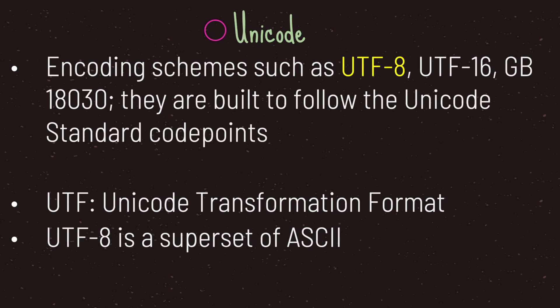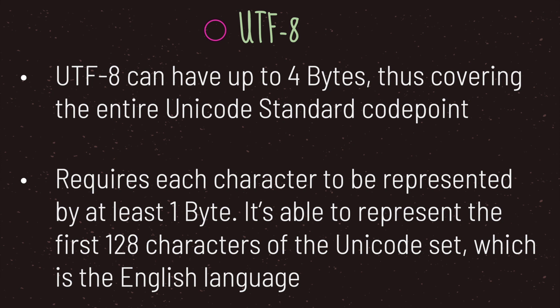There are a few encoding schemes that support Unicode — for example UTF-8, UTF-16, and GB18030 — and they are built to follow the Unicode standard code points. The most commonly used is UTF-8. UTF stands for Unicode Transformation Format. UTF-8 is a superset of ASCII and can have up to four bytes, thus covering the entire Unicode standard code point space. UTF-8 requires that each character be represented by at least one byte, and it is able to represent the first 128 characters of the Unicode set, which is the English language.